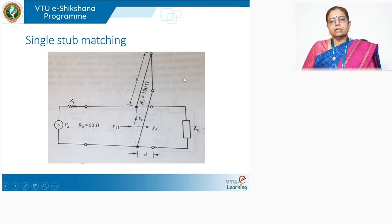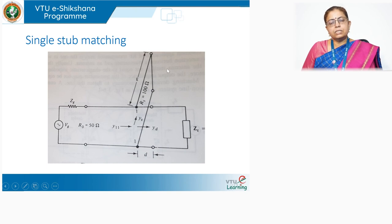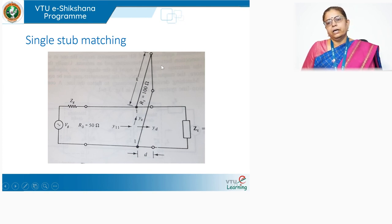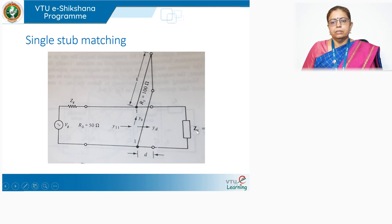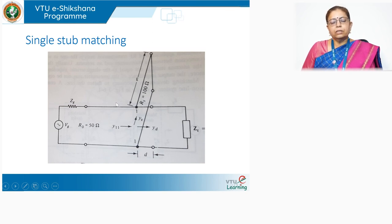To summarize: a stub is a small piece of transmission line; a single stub uses one such piece. We need it for impedance matching because the line impedance is not equal to the load impedance. Without it, there will be reflections from the load end that lower power on the transmission line. This concludes Module 1 on impedance matching and all the related lectures. Thank you.